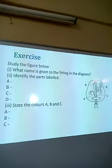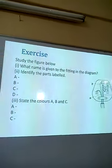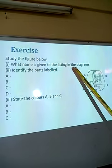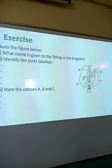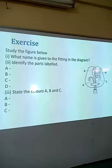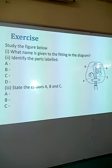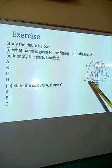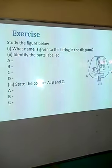Next, we have a simple example or problem involving these 3-pin plugs. Study the figure below. What name is given to the fitting in the diagram? Identify the parts labeled A, B, C, and D, and then state the colors of A, B, and C. Now this is supposed to be your assignment, bearing in mind which wire is colored red, which one green, and which one is blue. You are supposed to state that based on the labeling within this diagram — go and do that assignment and answer that question.